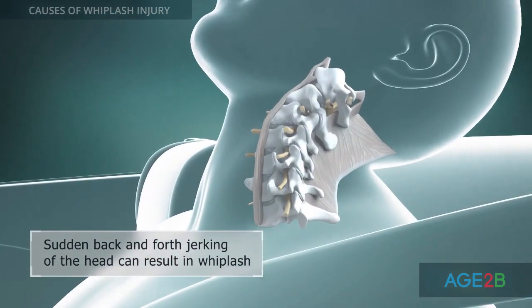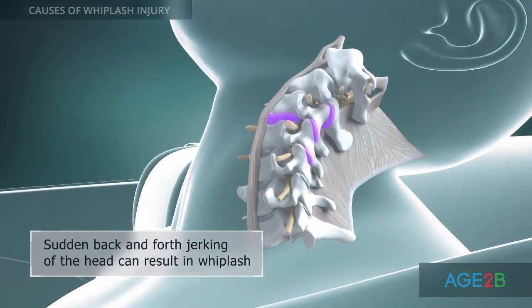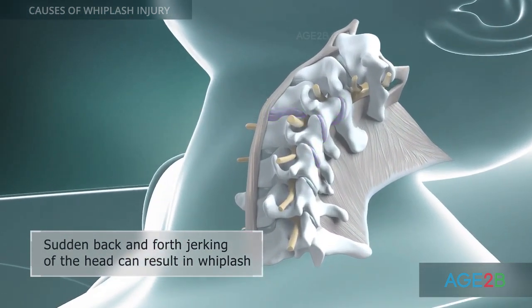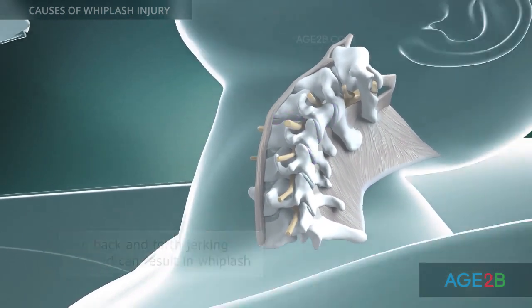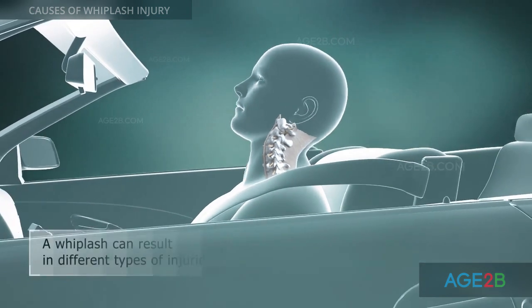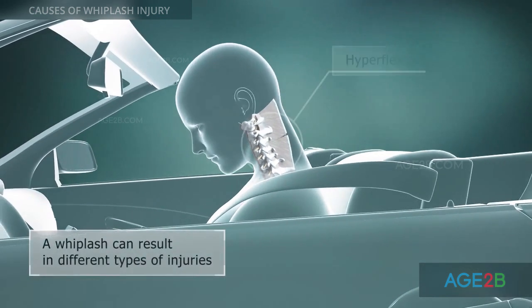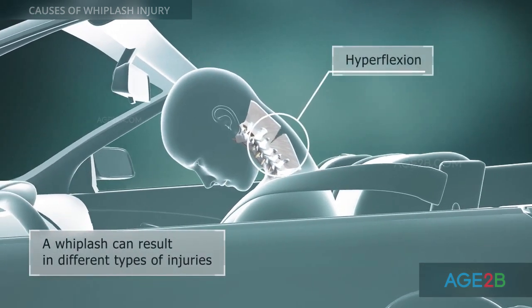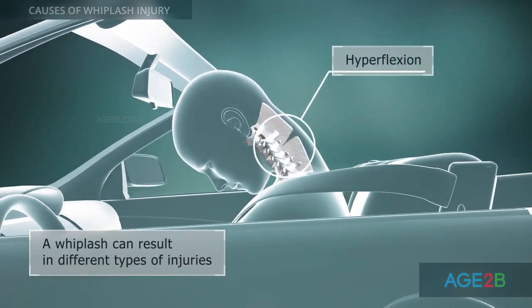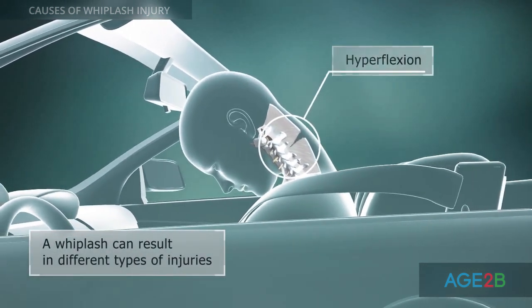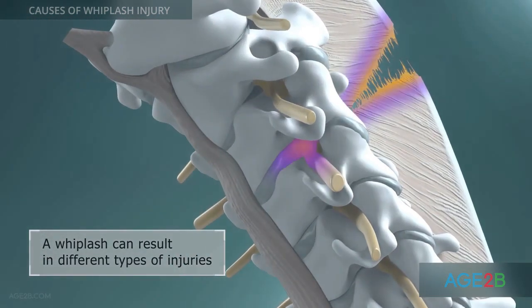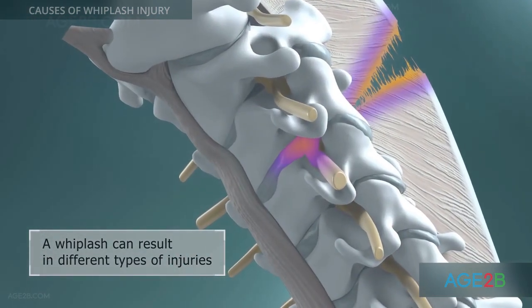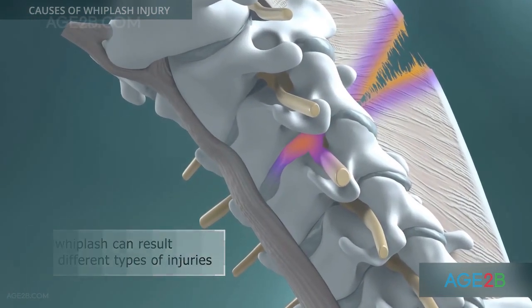Whiplash, also known as hyperextension or hyperflexion injury, occurs when the head is jerked suddenly and forcefully back and forth. Many different parts of the neck's complex anatomy can be injured in whiplash.